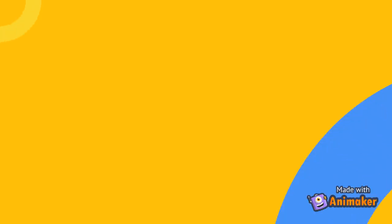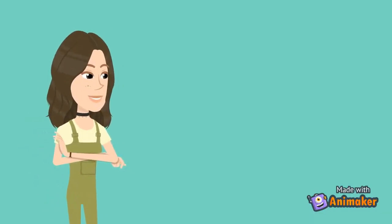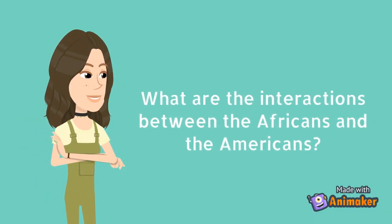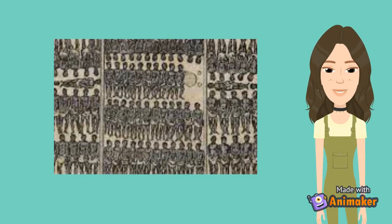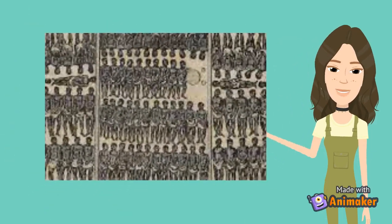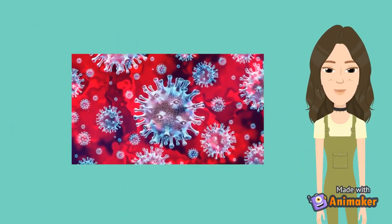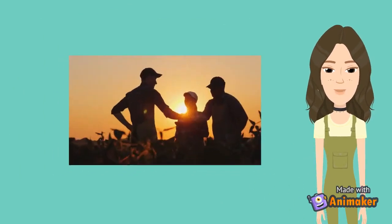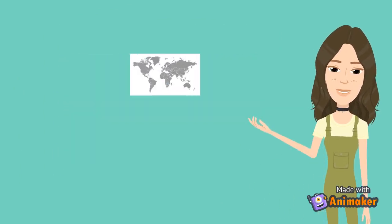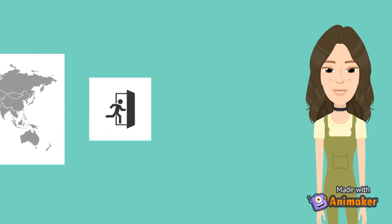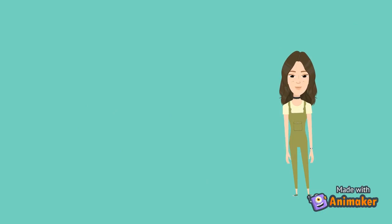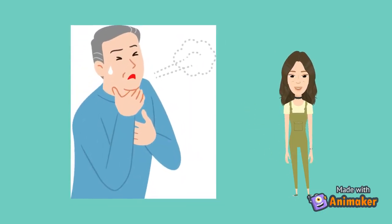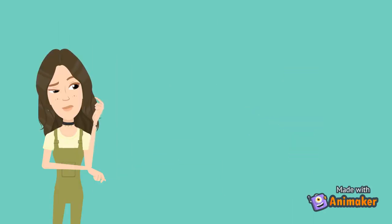The last main event that happened was the slave trade. The main interaction between the Africans and the Americans was the slave trade. You might wonder why they chose Africans as their slaves. Most Africans were not prone to most of the diseases, had experience in farming, and they were also unfamiliar with the land — meaning they would not know the way to escape slavery. Slaves were traded by ships.